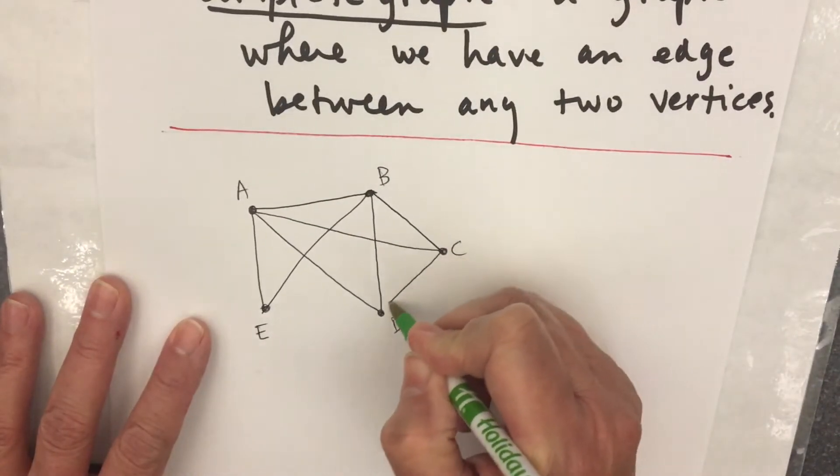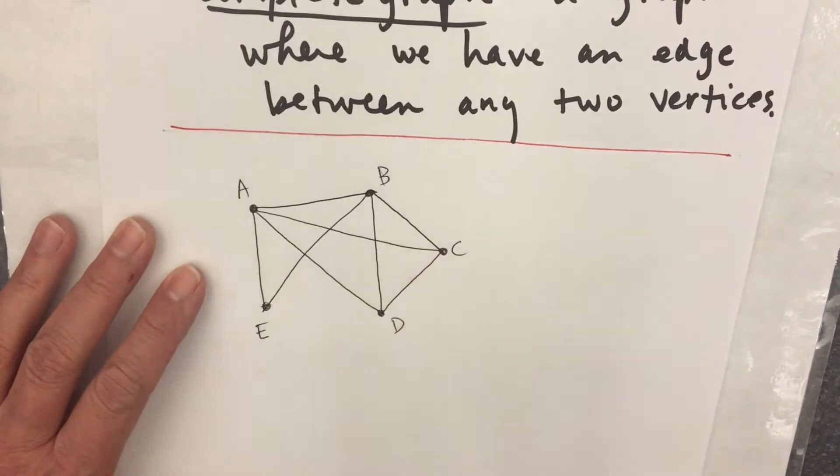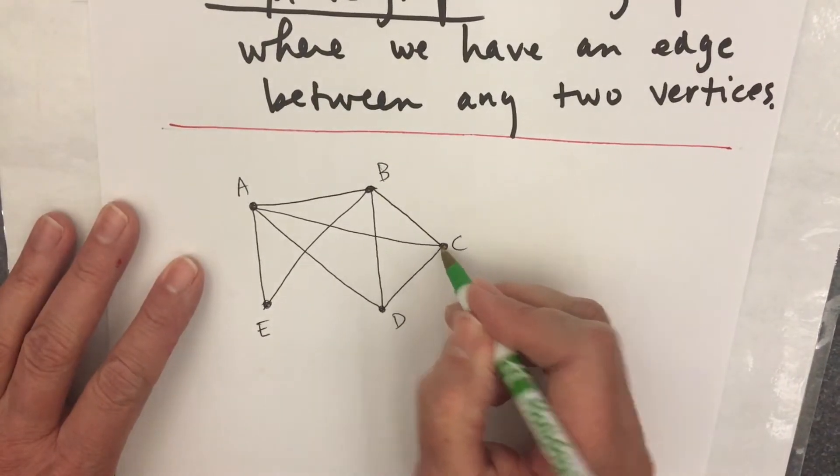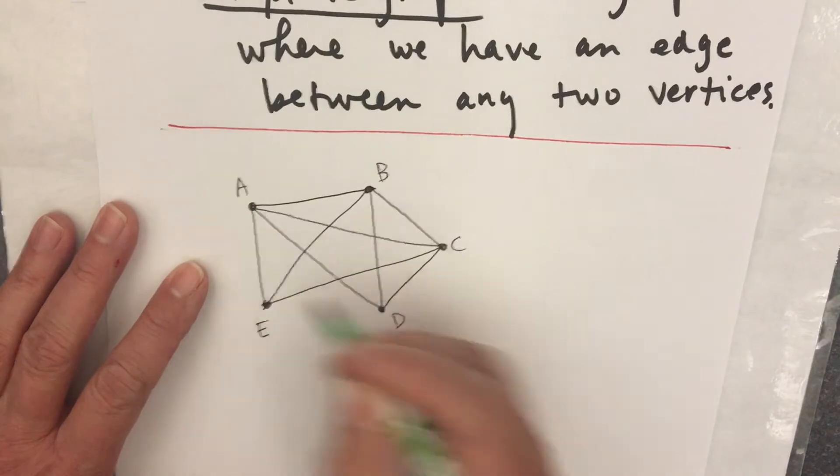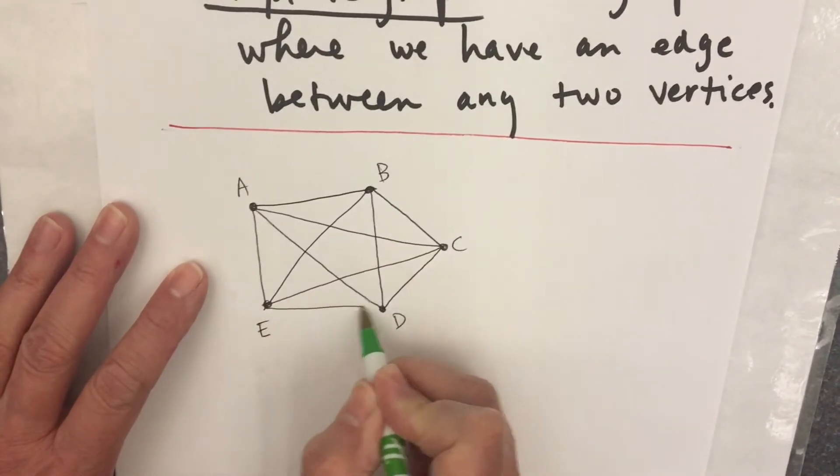There will be an edge from B to D. I'll make that C to D. There's an edge from C to E, and there's an edge from D to E.